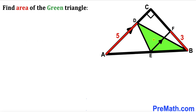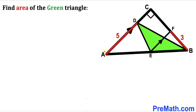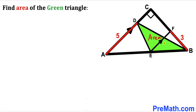Welcome to pre-math. In this video we have a green triangle DEB fully confined in a right triangle ABC, such that line AC is parallel to line EF. Segment AD is 5 units, segment FB is 3 units, and our task is to calculate the area of this green shaded triangle DEB.